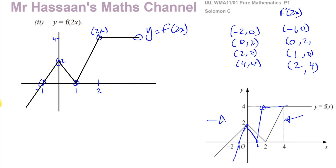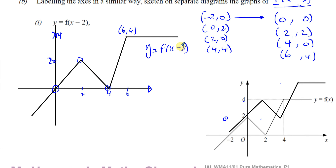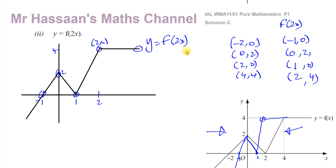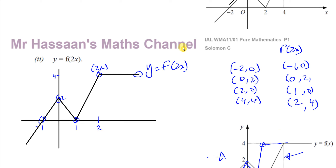To summarize the transformations in this question: all of them affect the x-coordinates because the changes are inside the function. For f(x minus 2), you add 2 to the x-coordinates — subtracting inside the function shifts right. For f(x plus 2), you would subtract 2, shifting left. For f(2x), you multiply the x-coordinates by the reciprocal of 2, which is one half. If the coefficient were 3 over 2, you would multiply by 2 over 3 — the reciprocal, not the negative reciprocal.